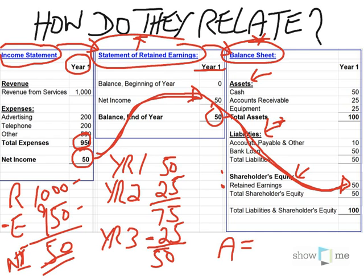Liabilities are items that the company owes money for. For example, if they bought supplies on account from Staples and haven't paid that bill yet, that would be in accounts payable. Other types of liabilities include borrowed money owed to the bank. So assets are things they own, and liabilities are things they owe.